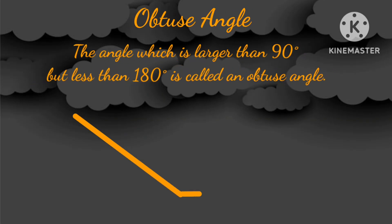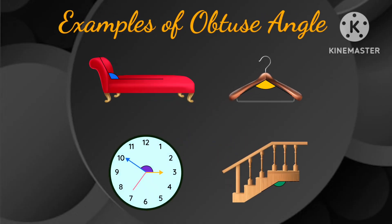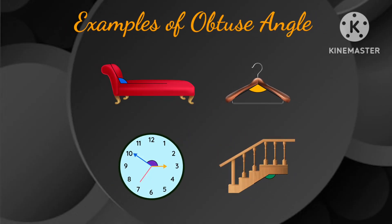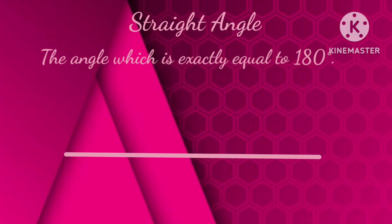An angle which is larger than 90 degrees but less than 180 degrees is called an obtuse angle. These are a few examples of obtuse angles.